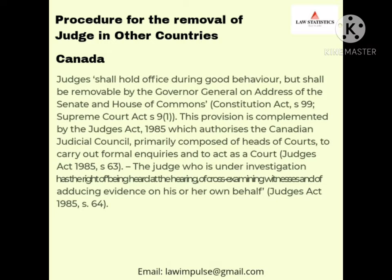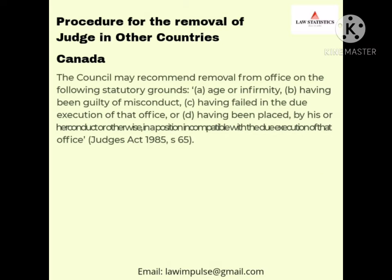In Canada, judges shall hold office during good behaviour but shall be removable by the Governor-General on address of the Senate and House of Commons. This provision is completed by the Judges Act 1985. The Council may recommend removal from office on the following statutory grounds: age or infirmity, having been guilty of misconduct, having failed in the due execution of the office, or having been incapacitated in the discharge of his or her duties.